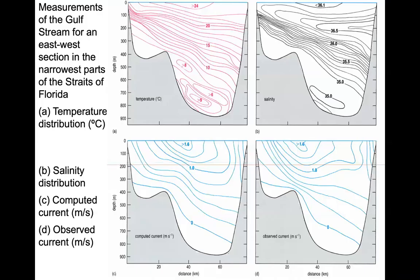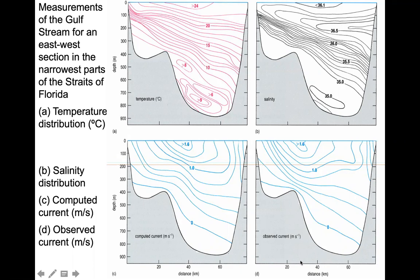Now let's look at our examples. This is from Figure 4.12 in your text — measurements of the Gulf Stream for an east-west section in the narrowest parts of the Straits of Florida. The first panel shows the temperature distribution in degrees Celsius. Panel B shows the salinity distribution. Panel C gives the computed current in meters per second, computed based on geostrophic flow. Panel D gives the observed current in meters per second — that's the actually measured current.